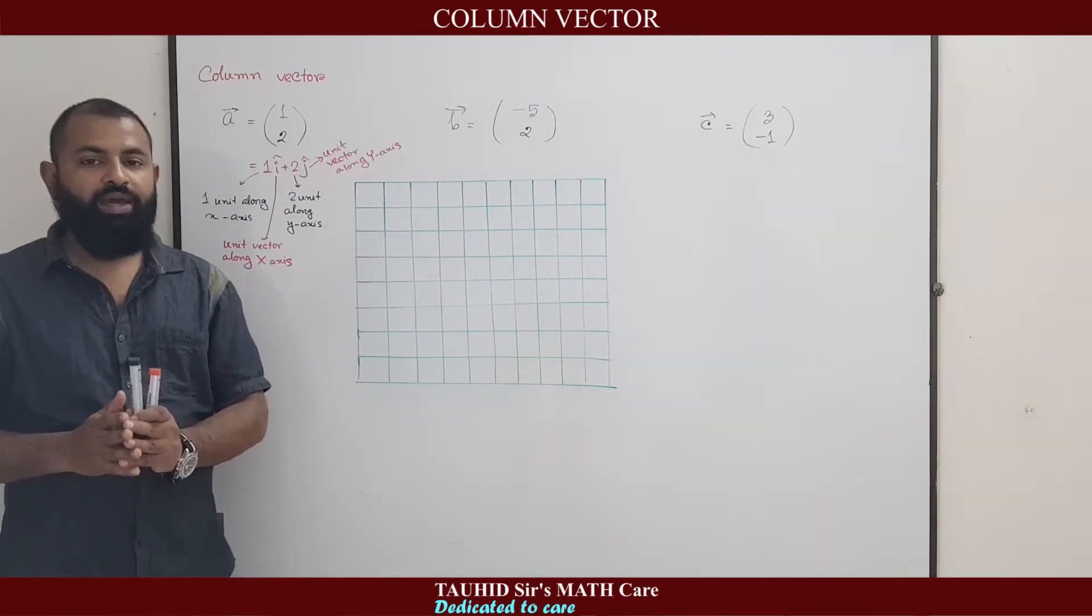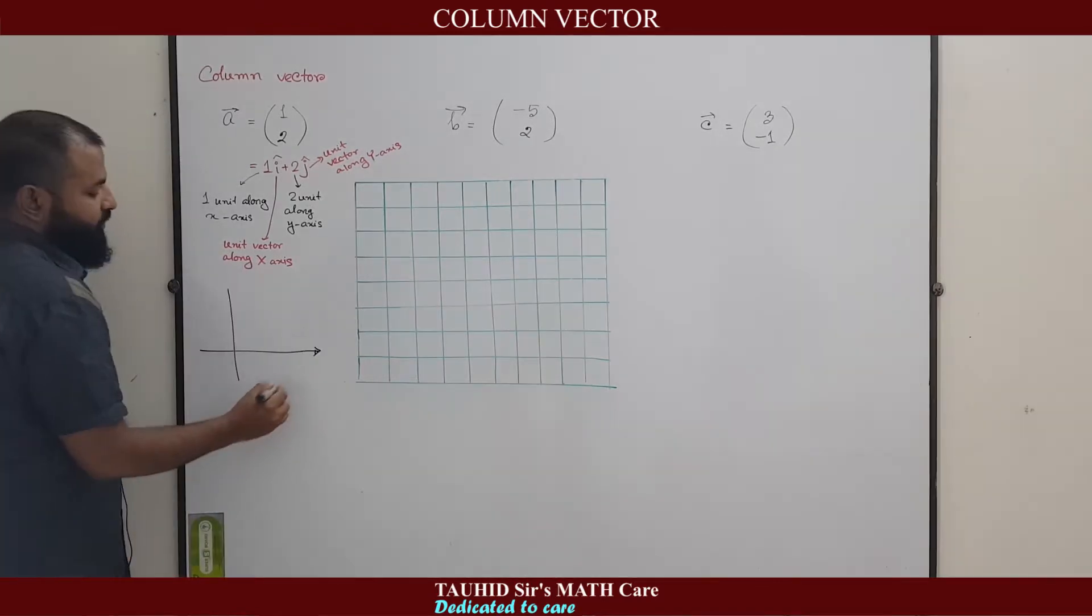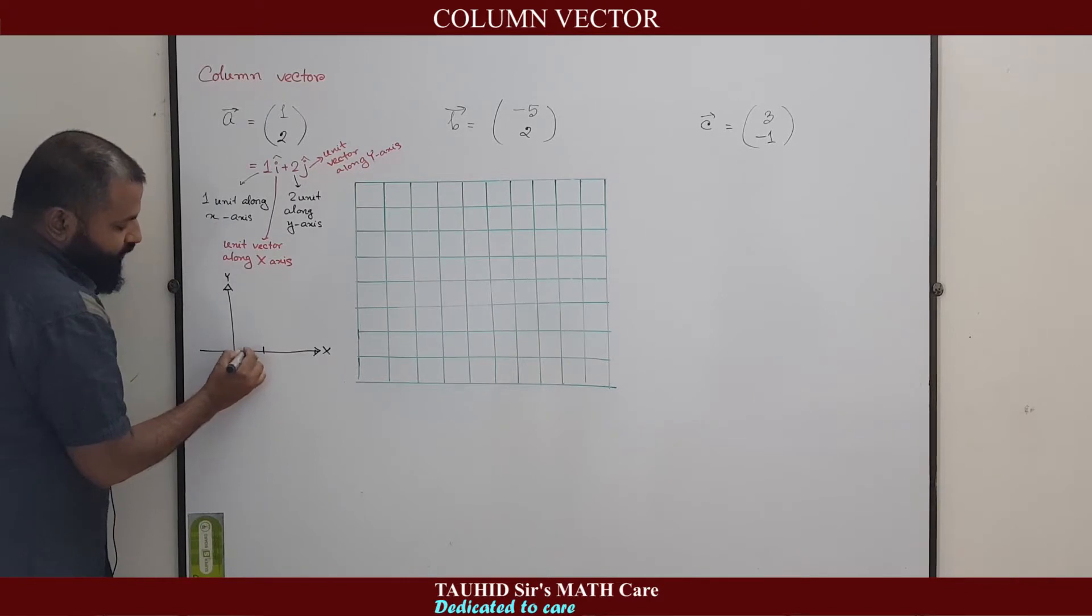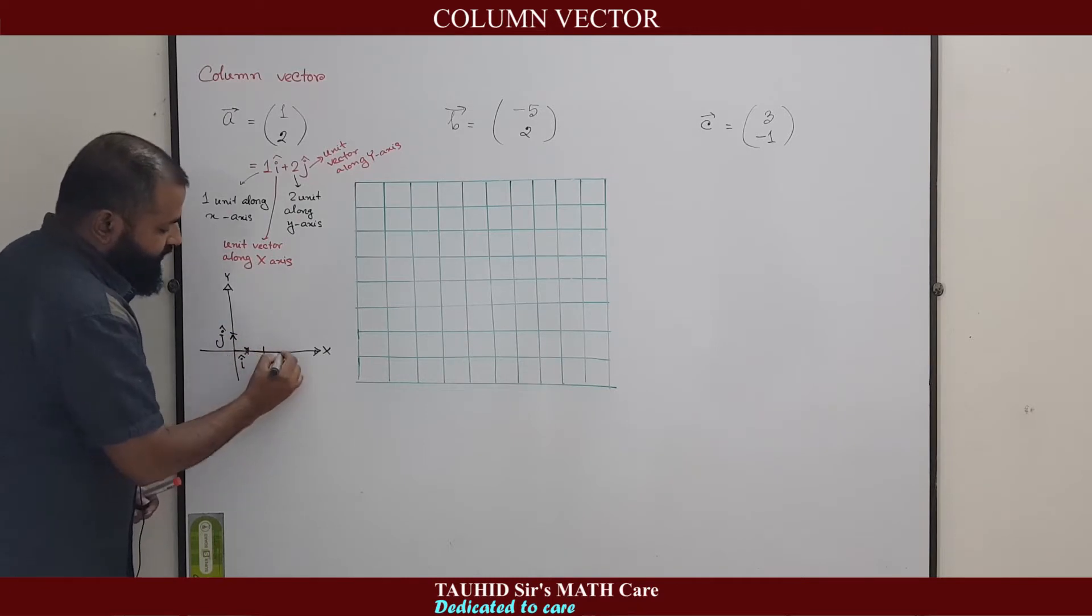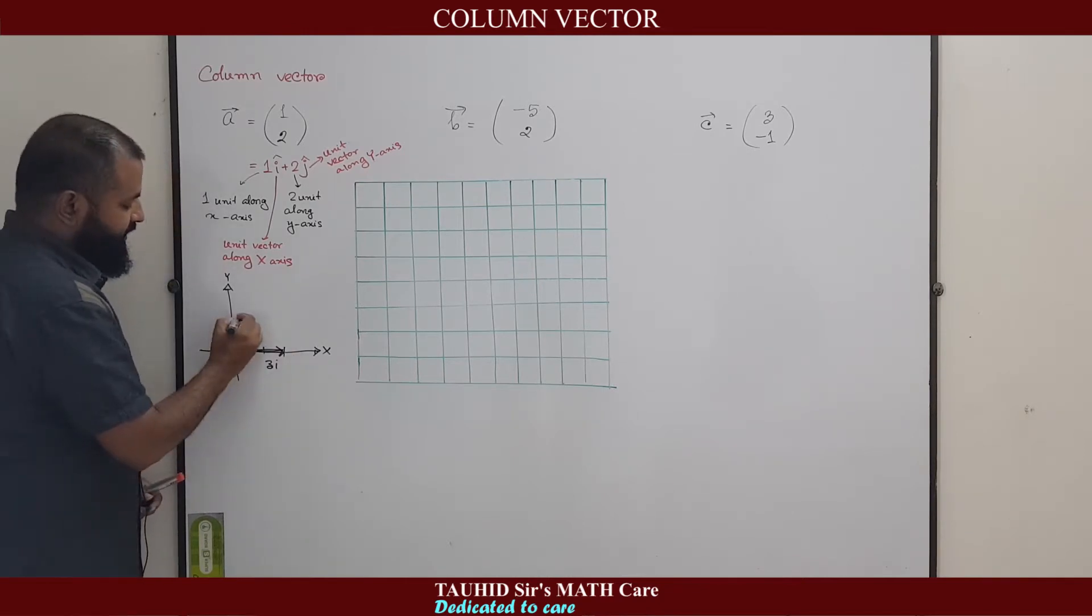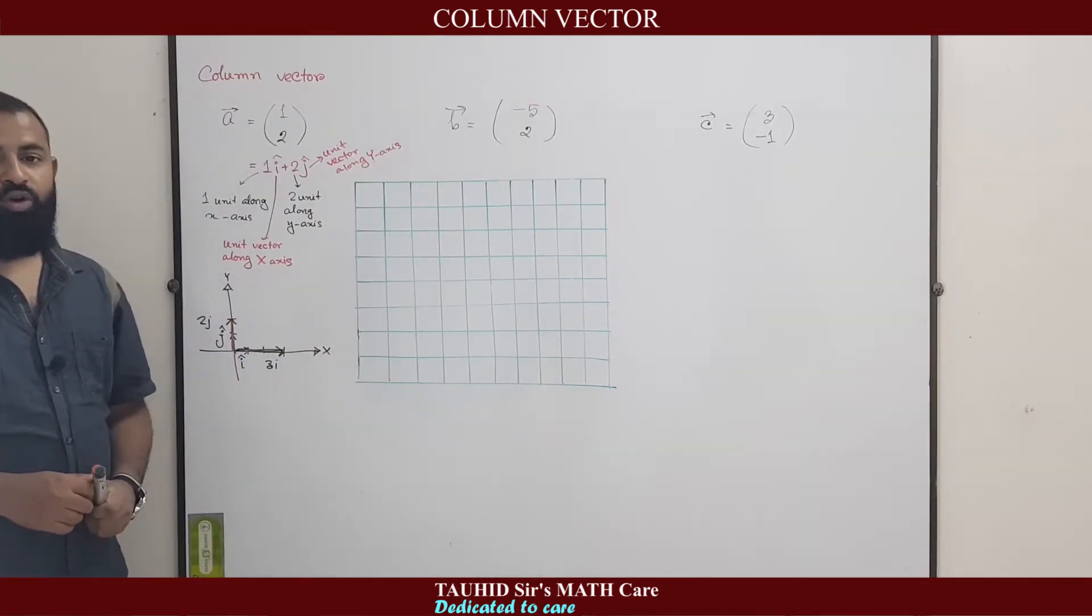What does unit vector i or j represent? If this is x-axis and this is y-axis, then one unit along x-axis, this is unit vector i. One unit along y-axis, this is unit vector j. If I ask for 3i, 3i will be this vector: 1, 2, 3 units. If I say 2j, 2j will be this vector: 1 unit, 2 units. This is the case of unit vector.